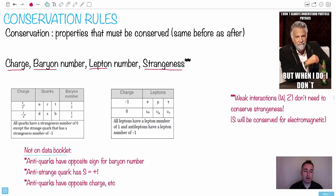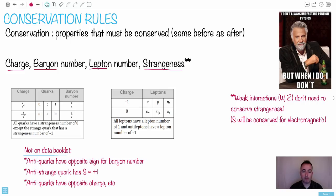Then we've got baryon numbers. UCT all have a baryon number of one-third, and DSB also have one-third. Leptons, by the way, they don't have a baryon number, so they have a baryon number of zero. Conversely, lepton number — notice there's no lepton number written for the quarks because they're not leptons. That's why their lepton numbers are zero.